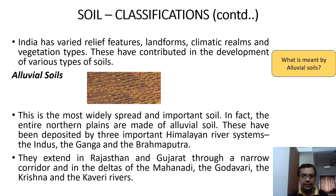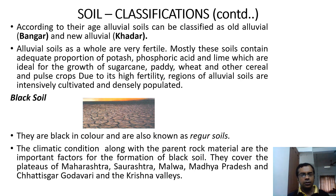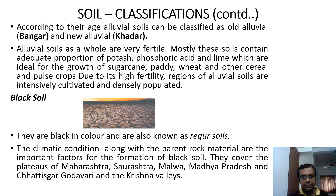They extend into Rajasthan, Gujarat, and the deltas of the Mahanadi, Godavari, Krishna, and Kaveri rivers. According to age, alluvial soils can be classified as old alluvial soil — otherwise known as Bhangar — and new alluvial soil known as Khadar. Alluvial soils as a whole are generally very fertile. Mostly these soils contain adequate proportions of Potash, Phosphoric Acid, and Lime, which are ideal for the growth of sugarcane, paddy, wheat, and other cereal and pulse crops. Due to their high fertility, regions of alluvial soils are intensively cultivated and densely populated.